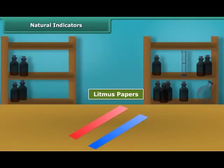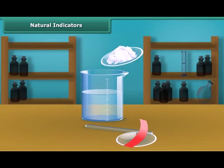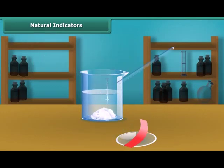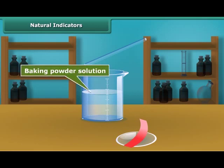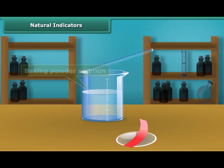Litmus is a natural indicator. It is extracted from lichens. It has a mauve color in distilled water. It is available in the form of a solution or litmus papers. You can test the nature of a solution by litmus paper.